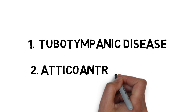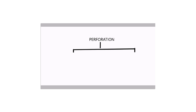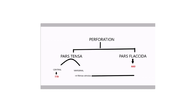There are two types: the first is tubotympanic disease, and the other is atticoantral disease. Both share a common characteristic, which is perforation. The tympanic membrane contains two parts: pars tensa and pars flaccida. In pars flaccida, there is always atticoantral disease. Pars tensa contains two parts — central and marginal. If perforation occurs centrally, there is always tubotympanic disease, except in the posterior superior quadrant. If the marginal part involving the fibrous annulus is perforated, there is always atticoantral disease.